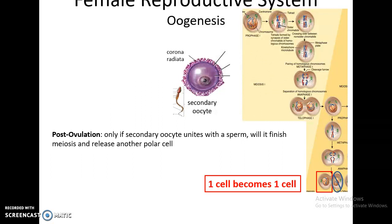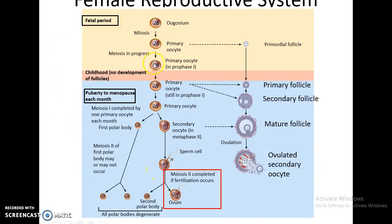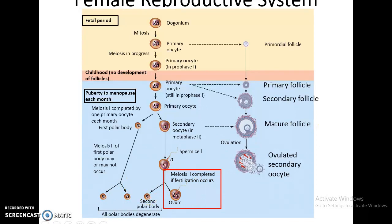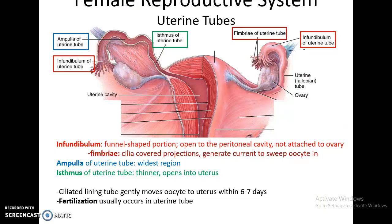During the fetal period, many primordial follicles form with primary oocytes still at 46 chromosomes. During childhood, nothing happens. At puberty, once every month or so, a primordial follicle becomes a primary follicle, then a secondary follicle, and then a mature follicle, at which point meiosis resumes. The first cell division produces a polar body that is discarded and a secondary oocyte with 23 chromosomes containing most of the cytoplasm. Ovulation then occurs, and if and only if fertilization occurs, meiosis completes with the second cell division and a second polar body being discarded.